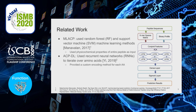Previous models to predict anticancer peptides include MLACP, which used the physicochemical properties of the entire peptide as input features to random forests and support vector machines. ACPDL uses recurrent neural networks to iterate over amino acids, much like our own proposed method. At present, it appears to be the first and only model to use this technique.